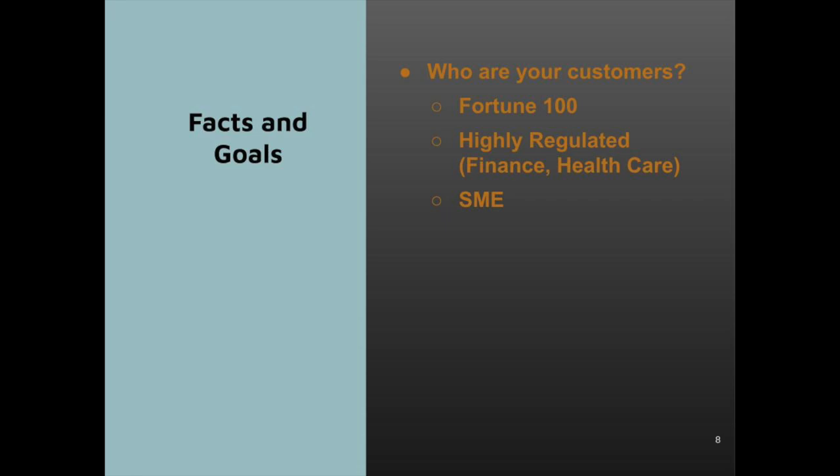Another thing to consider is who your users will be. If you are developing for use by large companies, you will find more resistance to copyleft licenses. If you are selling to customers in highly regulated industries like finance or health care, you may be more likely to have to distribute your software to those customers, even if your product is fundamentally software-as-a-service. Customers in these industries often require local instances of software products for security and regulatory purposes. If you are selling to small and medium enterprises, you will find less resistance to a copyleft license. If you want to understand more about how companies view adopting open-source software developed by others, take a look at the Blue Oak Council open-source policy. That policy represents a modal view of industry players on the use of open-source software.